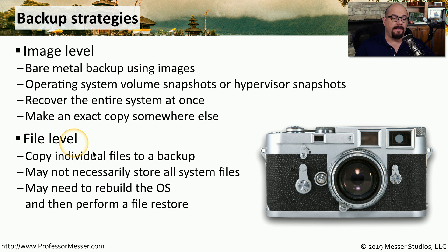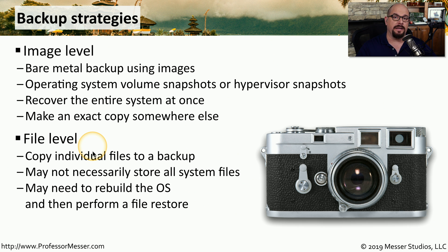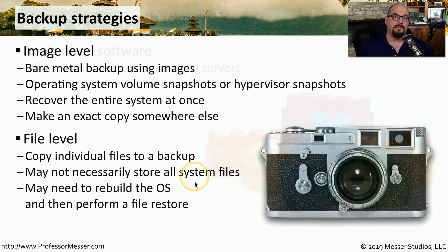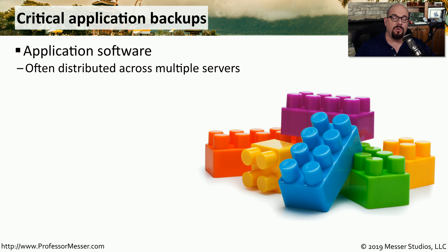Another type of backup strategy is the file-level backup, where you're simply copying the important files stored on that device. You may not be copying the entire operating system, but you'll have all of the files necessary to get your applications running. This means if you need to recover a particular application, you'll need to find a device that at least has an operating system running, and from there you can restore your applications and files on that existing OS. Restoring an application may be relatively simple, or it may involve multiple devices and have a level of complexity associated with it.